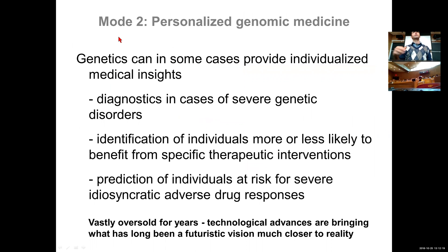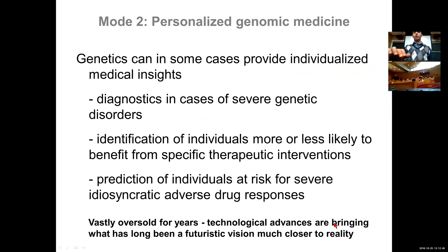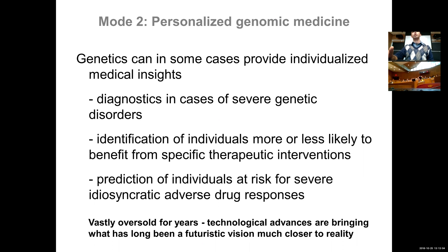The second mode that is in everybody's mind is personalized genomics — genetics providing individualized medical insights, diagnostics in cases of severe genetic disorders, identifying individuals more or less likely to benefit from a specific therapeutic intervention, and predicting individuals at risk for severe adverse drug effects. A lot of this has been heavily oversold for many years. Technical advances are bringing this futuristic vision to reality, but many GWAS common variants have very small effect sizes. The second mode is predominantly for rare variants that have much stronger effects.